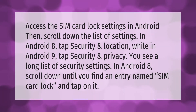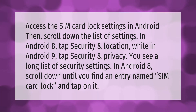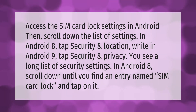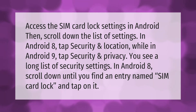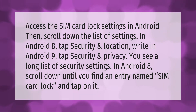To access the SIM card lock settings in Android, scroll down the list of settings. In Android 8, tap 'Security and Location'; in Android 9, tap 'Security and Privacy'. You will see a long list of security settings — in Android 8, scroll down until you find an entry named 'SIM Card Lock' and tap on it.